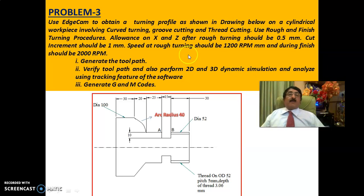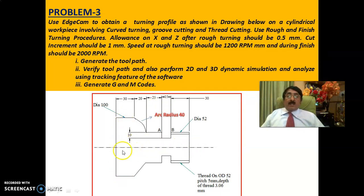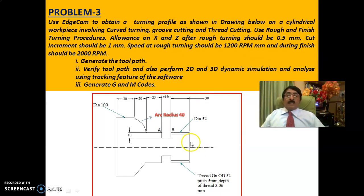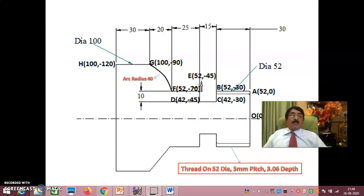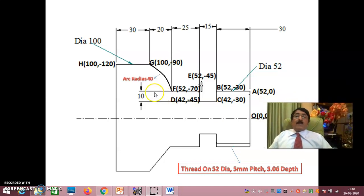As done in the previous problem, you should have rough turning as well as finish turning. The allowance on X and Z after rough turning should be 0.5mm — that means allowance on X (diameter) is 0.5 and on Z (axis) is 0.5. Speed at rough turning should be 1200 RPM, and during finishing should be 2000 RPM. These are the same points taken last time.